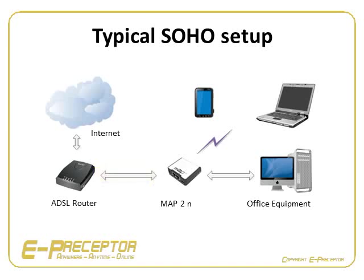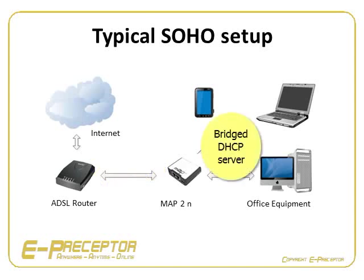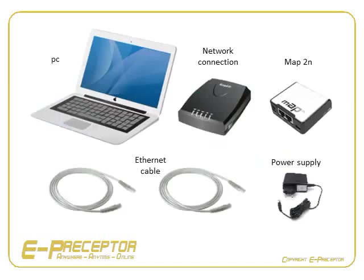All the needed firewall, NAT and other settings will be in place on the MikroTik with its default configuration — no need to know any of the technical detail. On the MikroTik, the wireless and Ethernet 2 interfaces will be bridged together and act as a DHCP server, allowing all office equipment to connect automatically via the copper or wireless interface.